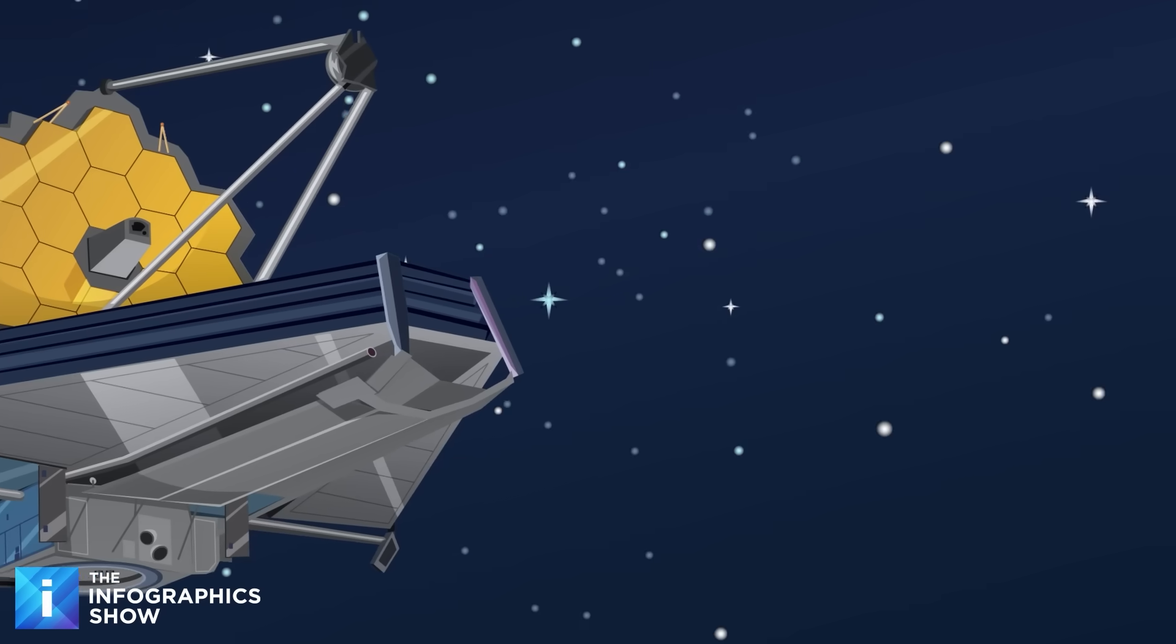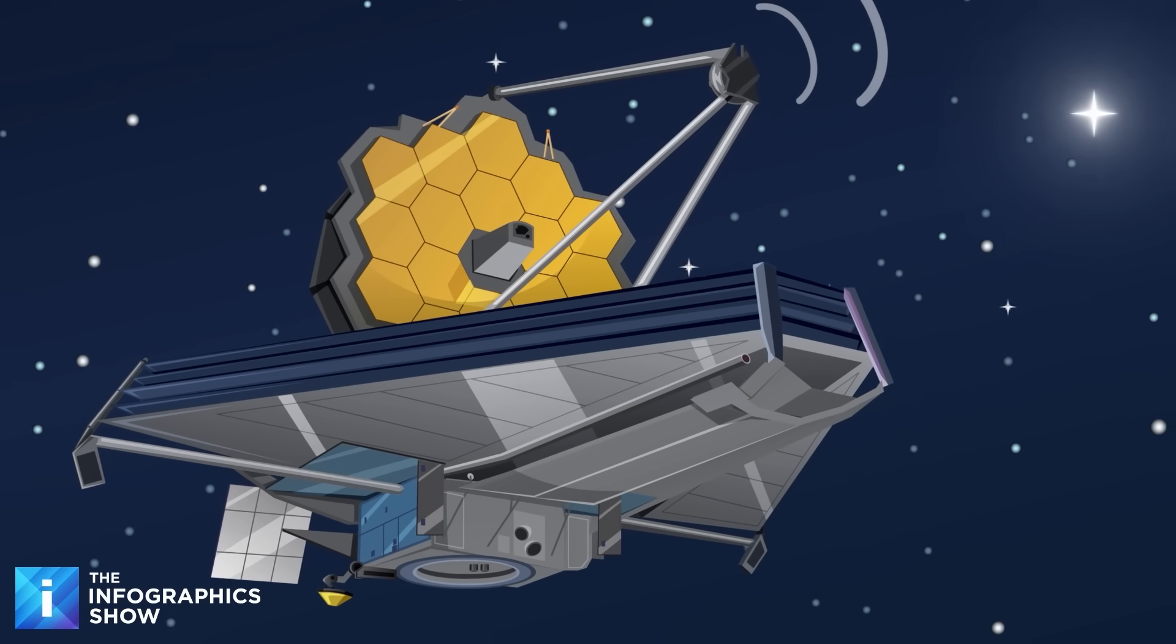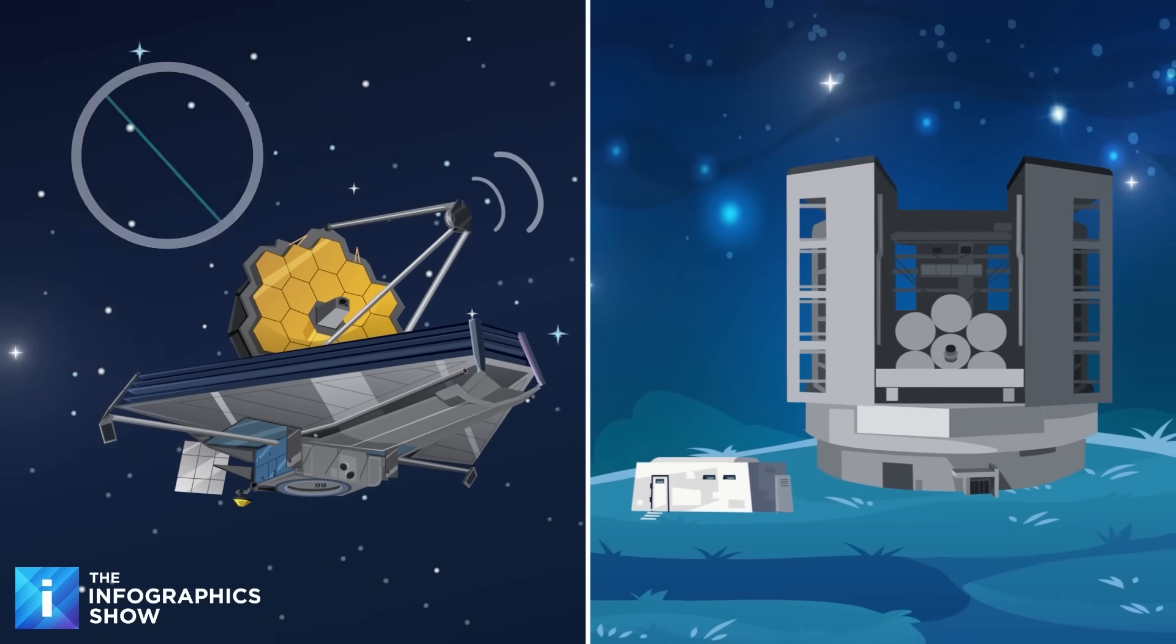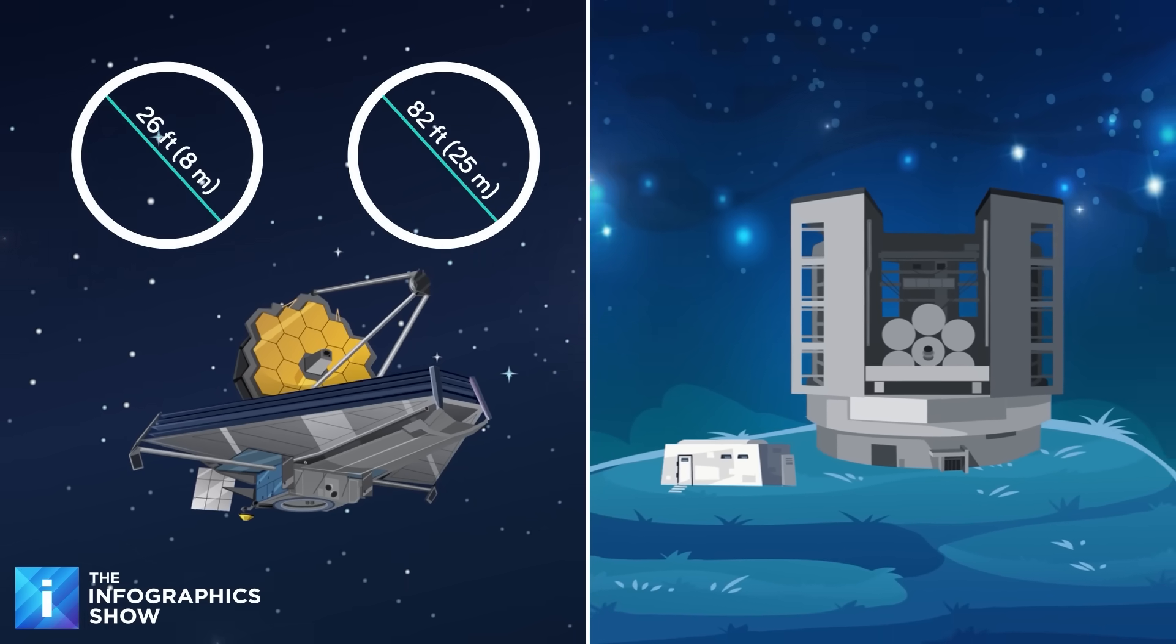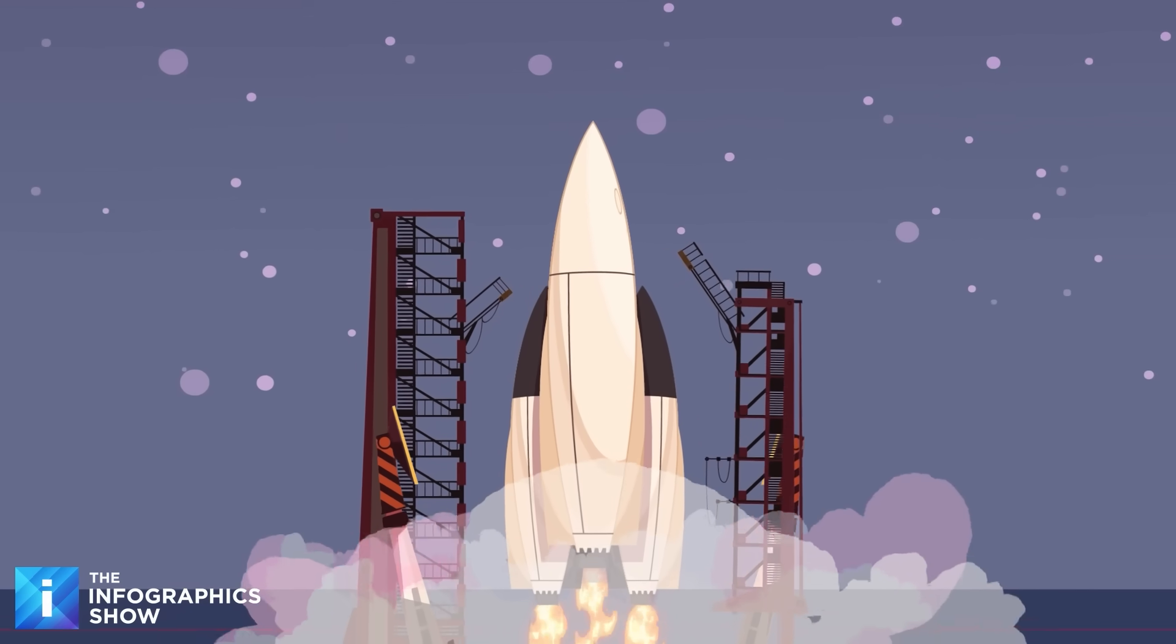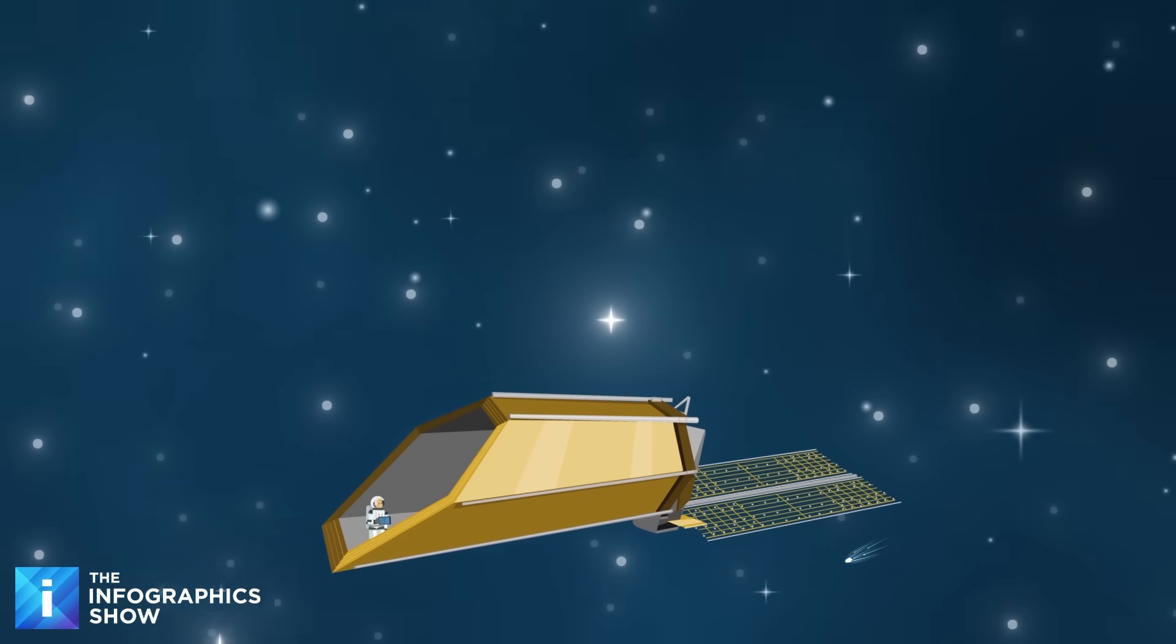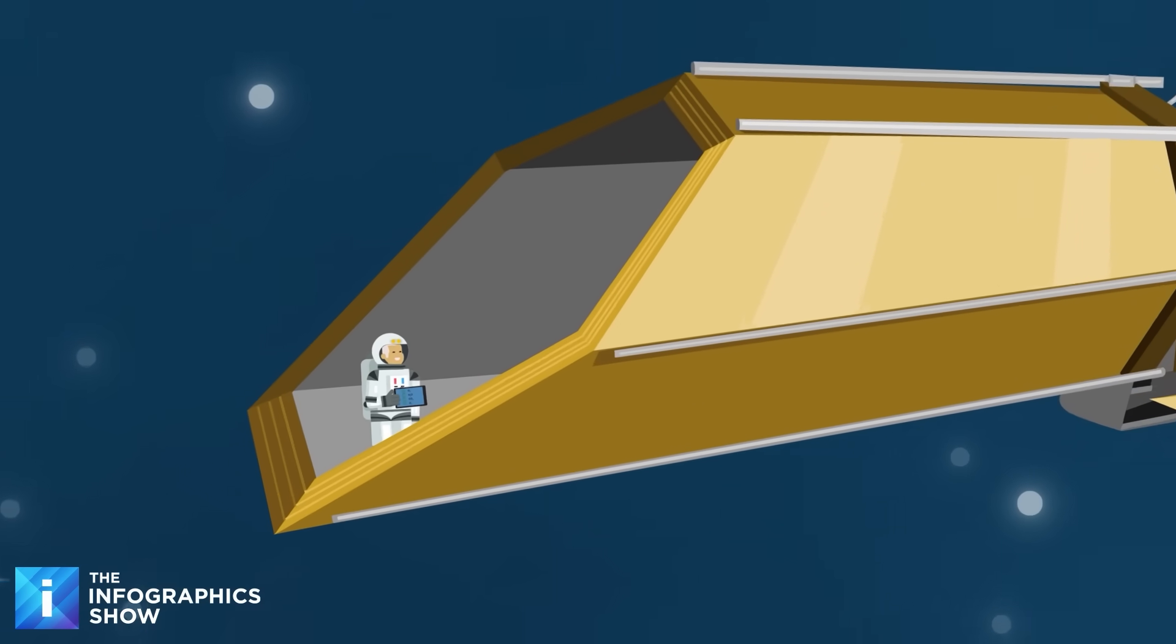While the James Webb Space Telescope has yielded impressive results so far, it only has the capability of imaging gas giant planets. Several new types of telescopes are under development, including the Giant Magellan Telescope that will utilize seven mirrors each over 26 feet in diameter to form an 82-foot diameter mirror offering a significantly higher resolution than the Hubble. The Nancy Grace Roman Space Telescope is also scheduled to be launched in 2027 to offer infrared wide-angle views. NASA's next flagship telescope will be the Habitable Worlds Observatory, and it will seek to directly image Earth-like planets in the 2040s.